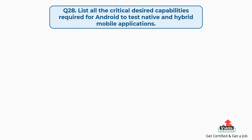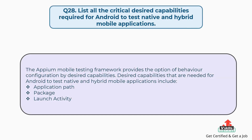Question number 28: List all the critical desired capabilities required for Android to test native and hybrid mobile applications. The Appium Mobile Testing Framework provides the option of behavior configuration by desired capabilities. Desired capabilities needed for Android to test native and hybrid mobile applications include Application path, Package, and Launch activity.